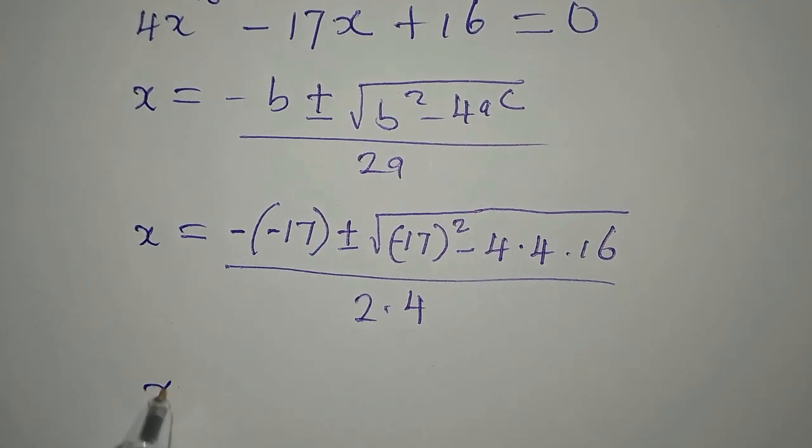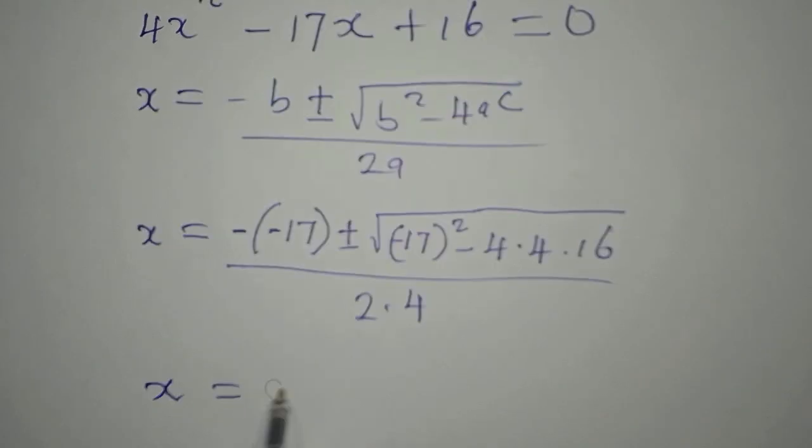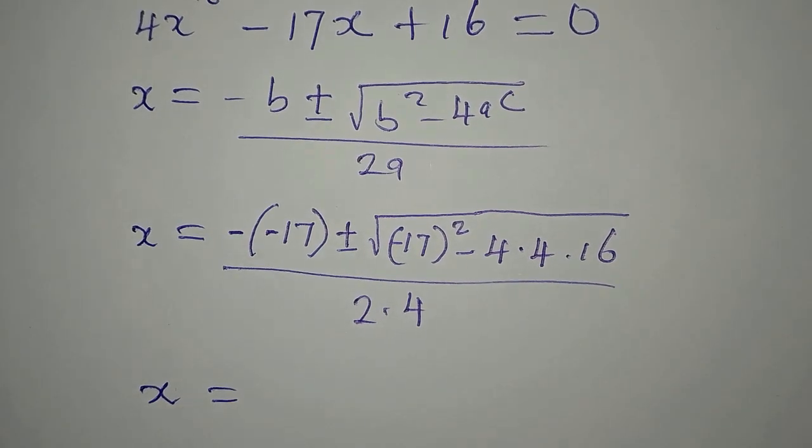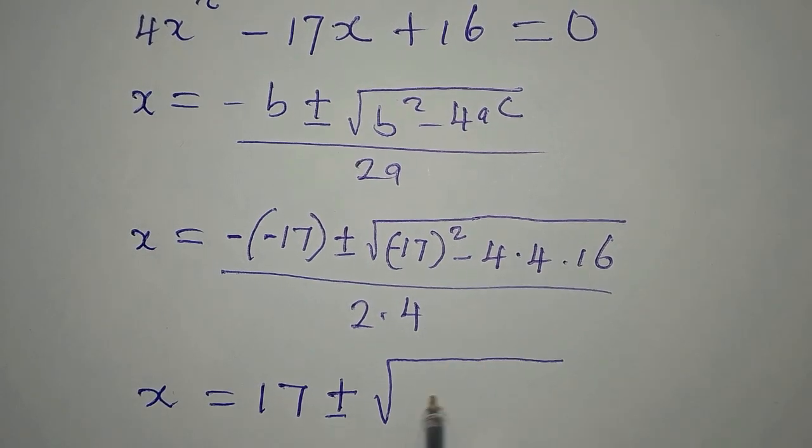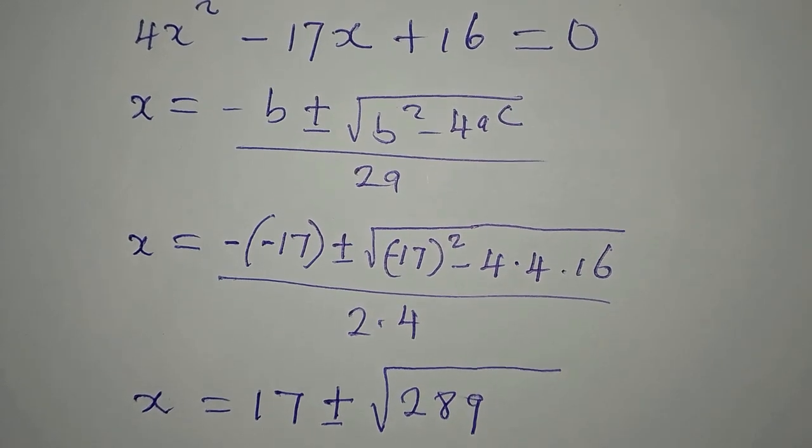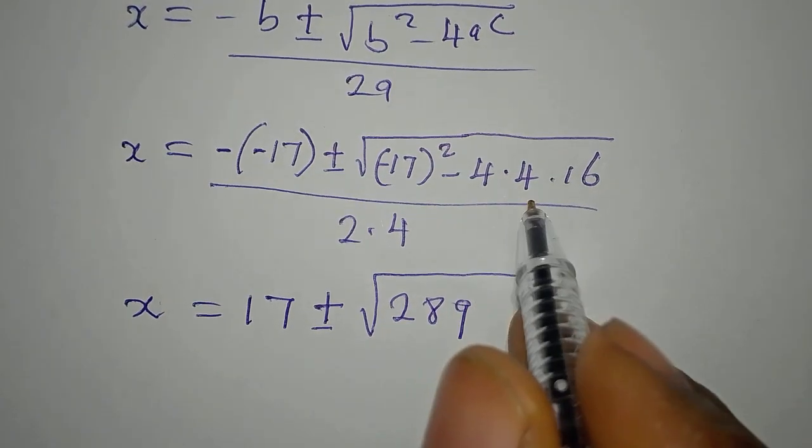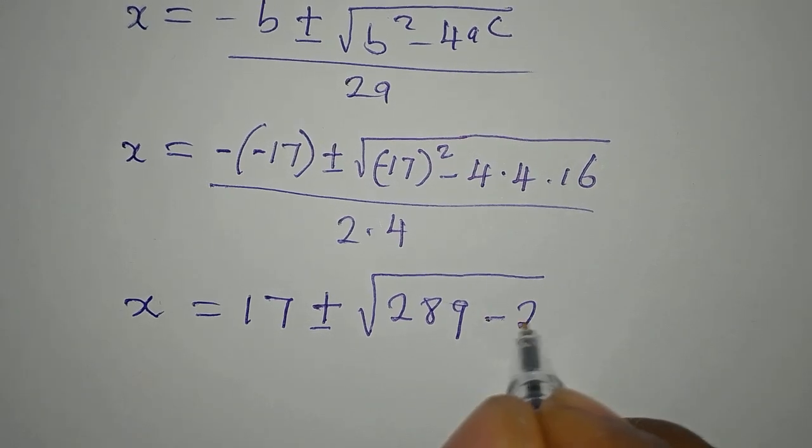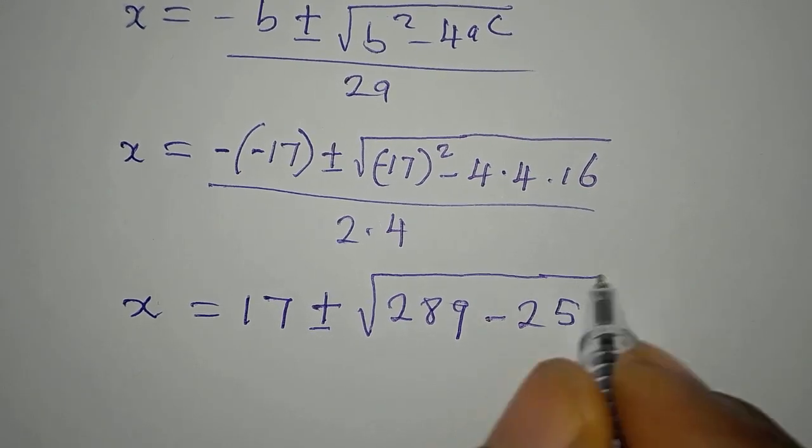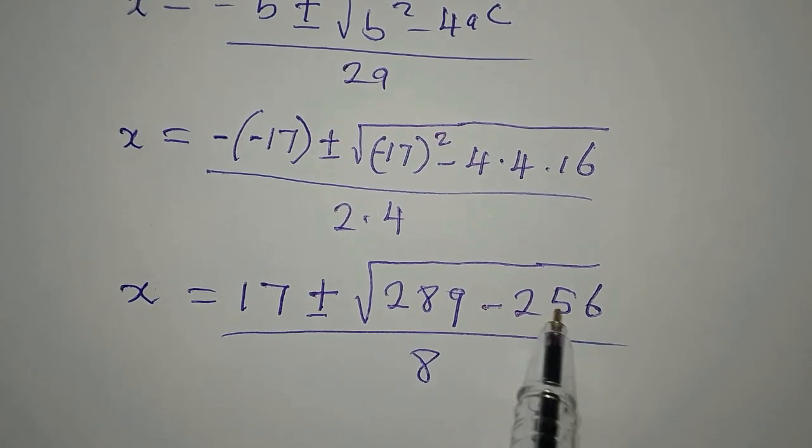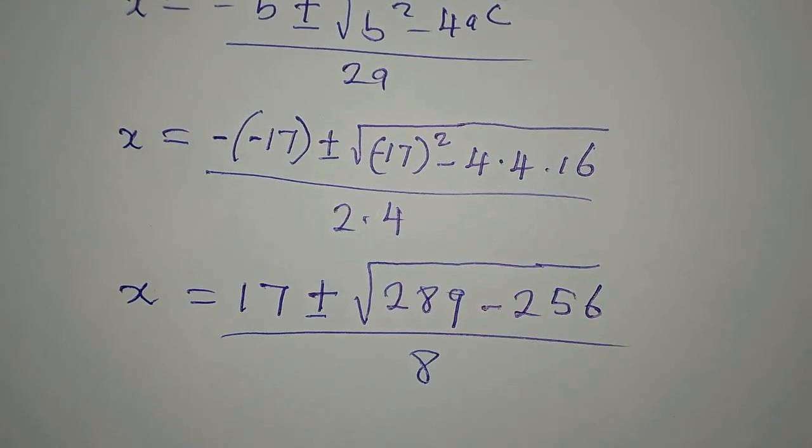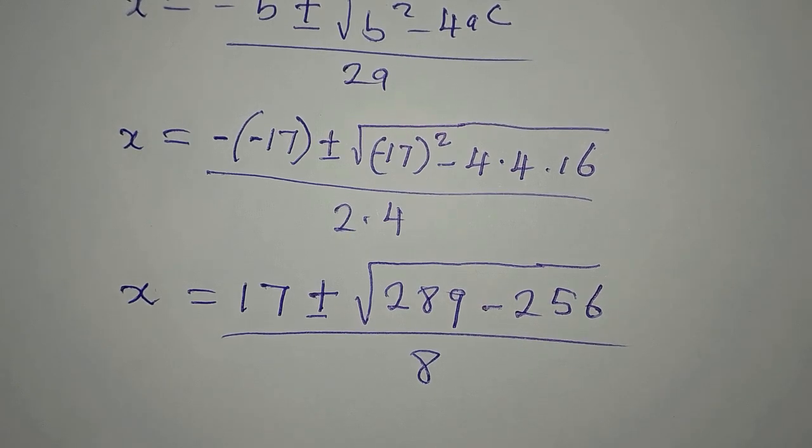So x now is equal to negative negative is positive, so we have 17 plus or minus, here we have 17 squared that would be 289 positive, then 4 times 4 is 16, 16 times 16 is 256, then everything is over 8. But then remember that we are going to subtract this before finding the square root. That's one of the mistakes that some learners make.